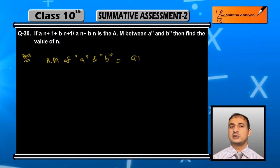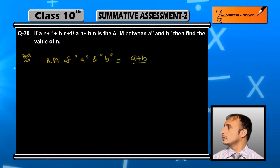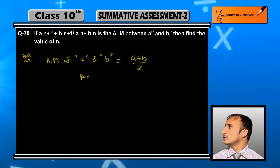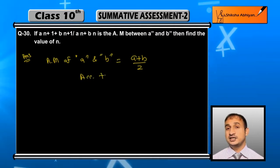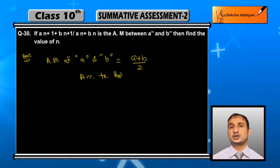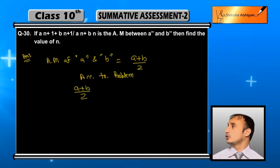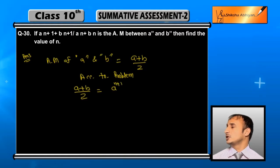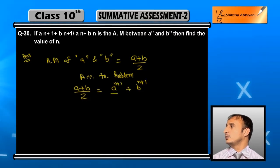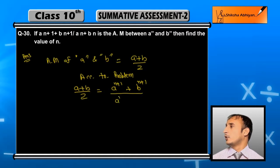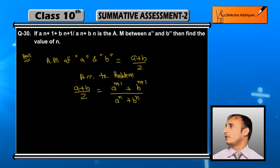The arithmetic mean of a and b will be (a + b) / 2. Now this arithmetic mean is equal to (a^(n+1) + b^(n+1)) / (a^n + b^n). According to the problem we can write: (a + b) / 2 = (a^(n+1) + b^(n+1)) / (a^n + b^n).